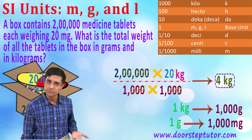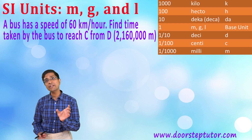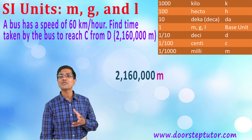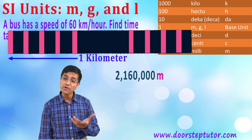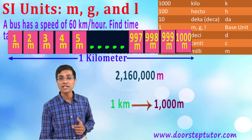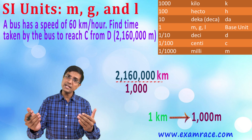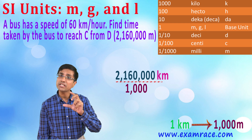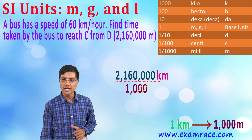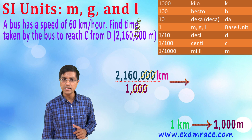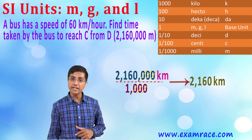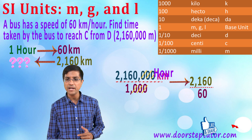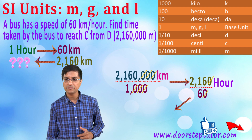Another example: the speed of a bus is 60 kilometers per hour, meaning it covers 60 km in one hour. The distance is given in meters, so I first convert it to kilometers. Since a kilometer is 1000 times larger than a meter, I divide by 1000 and cancel the zeros, giving 2,160 km. Now dividing that distance by the speed of 60 km/h, the answer comes out to 36 hours.